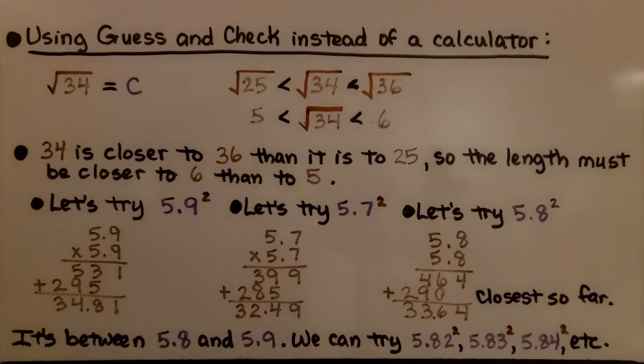If you're trying to get closer, you can round to the nearest hundredth. We know it's between 5.8 and 5.9. So we can try 5.82 squared and 5.83 squared, 5.84 squared, and so on to get it a little closer. But if you're just trying to solve it for the tenths place, this 5.8 would fit to be approximately c.